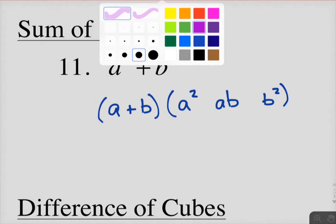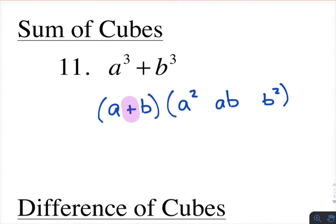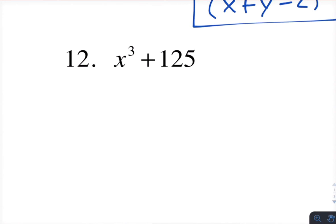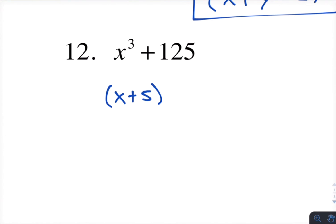So basically, this sign here always matches the original. This one is always opposite. And this one is always a plus. And so some of you may be familiar with mop or matching opposite plus. Some of you may be familiar with soap: same, opposite, always positive. So here's an example of the sum of cubes. So we know it's a binomial times this trinomial.